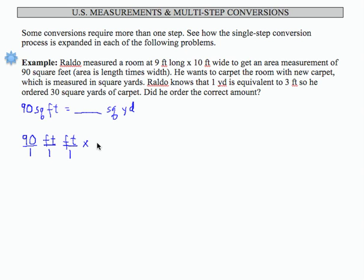So if I want to change the feet to yards, I'm going to have to include two conversions. 1 yard is 3 feet - that will convert the first set of feet, and I have to do this again. 1 yard is 3 feet - that will help us convert the second set.